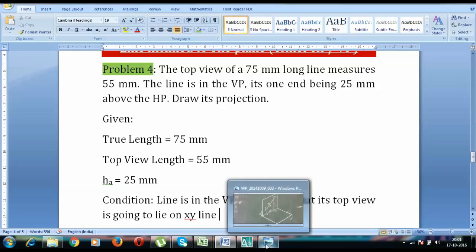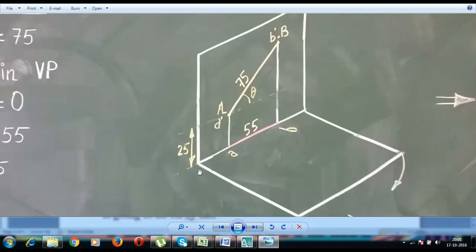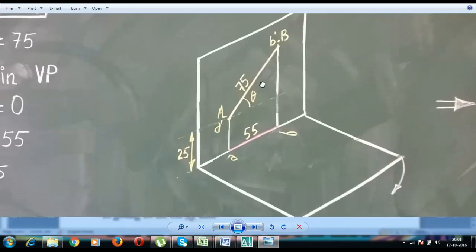This is a line, the true length of the line is 75 millimeters long, and this line entirely lies on the vertical plane. That's why when you look at this line from the top, the top view is lying on this XY line or the reference line. This endpoint A is at a height of 25 millimeters and this can only be seen from the front.